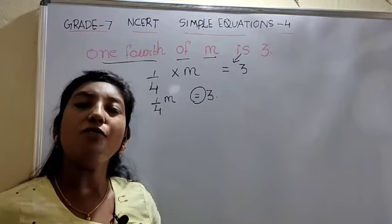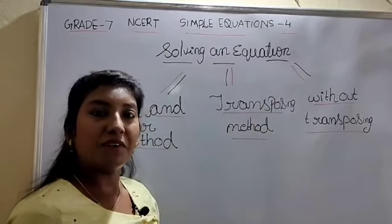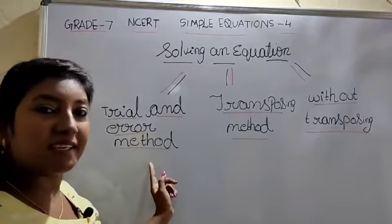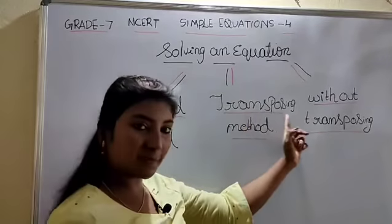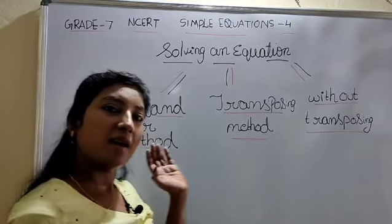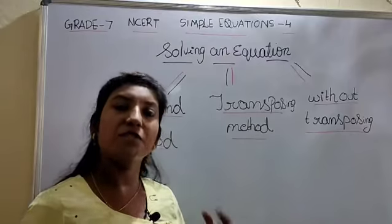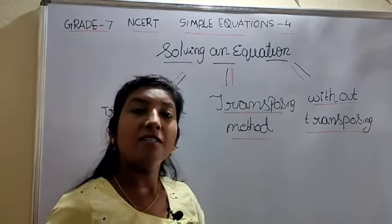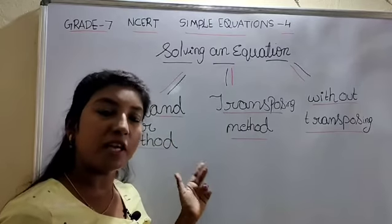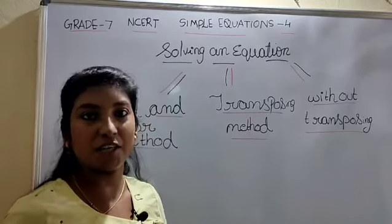Now, let us see how to solve an equation. To solve an equation, we have three methods: one is trial and error method, the next one is transposing method, and the other one is without transposing. You can solve an equation using any of these three methods, or choose one. If the question mentions a particular method, you have to use that method.